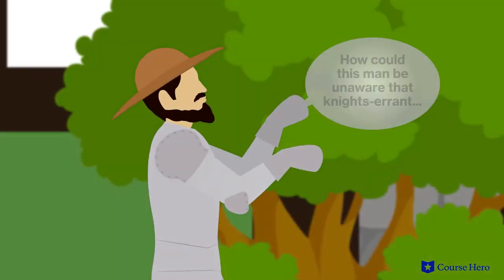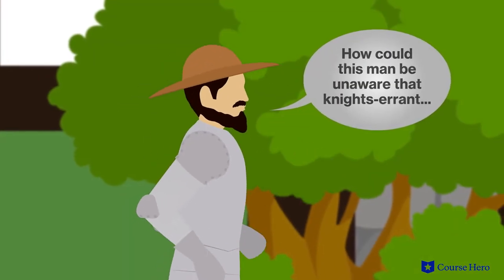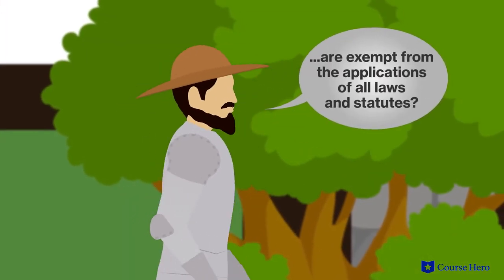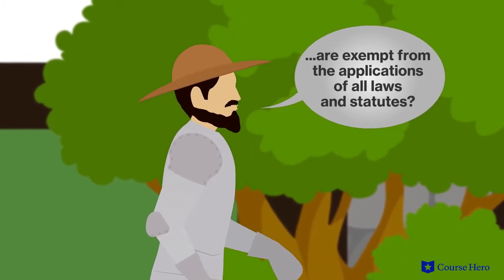One of the policemen realizes he has a warrant for Don Quixote's arrest for helping the galley slaves escape. The Don flies into a rage and chokes the man. They're separated, but Don Quixote continues to rant. How could this man be unaware that knights errant are exempt from the applications of all laws and statutes?